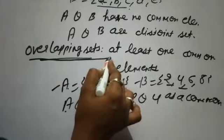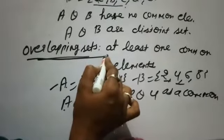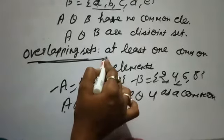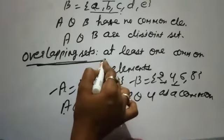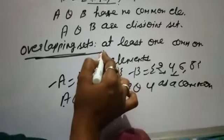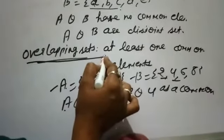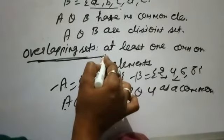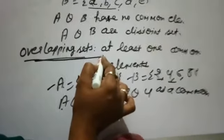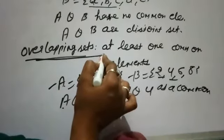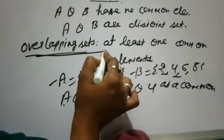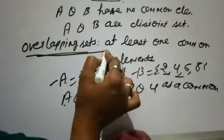I hope you understood about the different types of sets. In this video, we understood about equivalent set, equal sets, finite set, infinite set, overlapping sets, disjoint sets, empty set, and singleton set. Now we are going to start exercise number 4.3, which is based on the different types of sets.